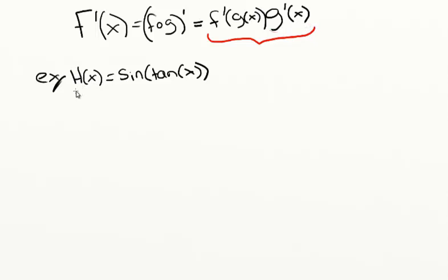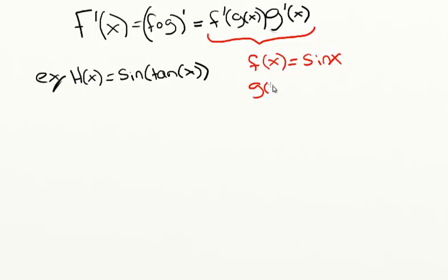Let's take a look at an example. We have capital H of x equal to the sine of the tangent of x. Our outside function f of x is going to be sine of x, and our inside function g of x is going to be tangent of x. It's pretty obvious what I mean by outside and inside functions, because you can see how the tangent of x is literally inside of the sine function.